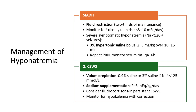When treating hyponatremia, do not correct sodium more than 10 mEq/L in 24 hours. Correct at 0.5 mEq/kg/hour, reaching 10 to 12 mEq/L in 24 hours. Correcting too fast causes central pontine myelinolysis, which can lead to coma, death, and severe neurodevelopmental delay. Be very careful and correct sodium slowly.